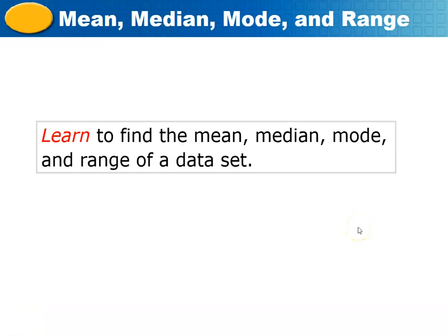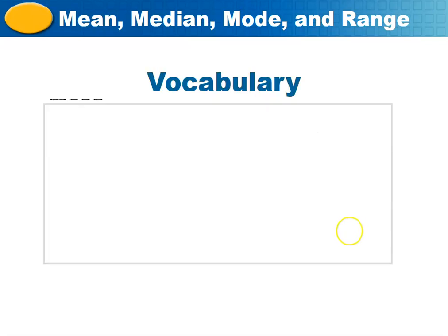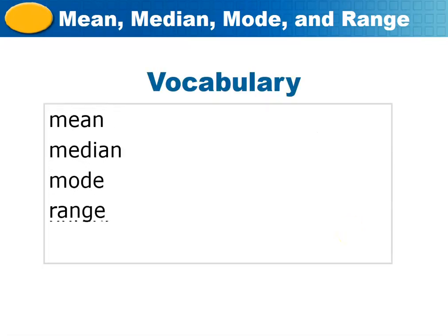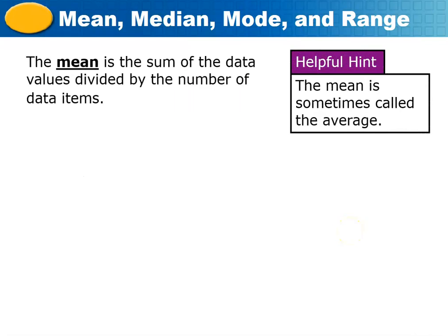In this video we are going to learn about mean, median, mode, and range of a data set. We'll define each term. The mean is the sum of the data values divided by the number of data items — it is sometimes called the average. To get the average, you add the total data and then divide by the number of data.